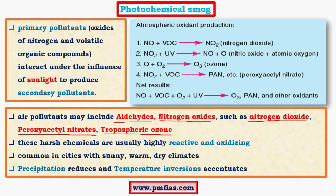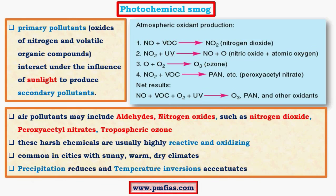Primary pollutants give rise to peroxyacetyl nitrate and various other pollutants. All these pollutants in the presence of sunlight again give rise to various components like ozone, peroxyacetyl nitrates and nitrogen oxides. All these are very harmful substances in the atmosphere which give rise to smog.